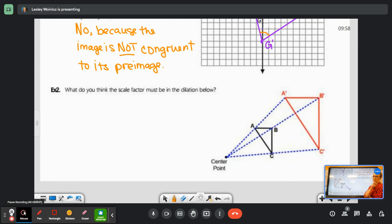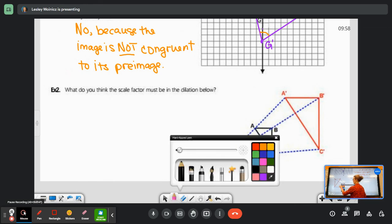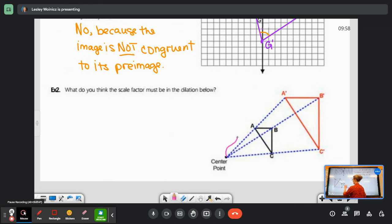But what do you think that the scale factor has to be for this dilation? So here I have a length from the center point to A. And then here I have that length again. Do you see that it has to be double?